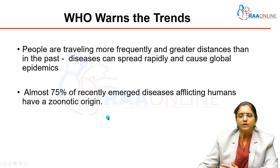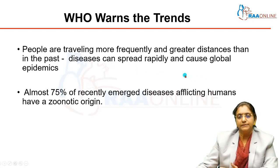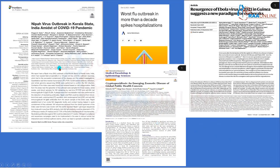WHO highlighted that one key reason for rapid spread is that people are travelling more frequently and over greater distances than in the past, due to better connectivity by air, rail, road, and sea. Because of that, diseases spread rapidly and can cause global epidemics. More than 75% of recently emerged infections affecting human beings have a zoonotic origin — meaning they come from animals.